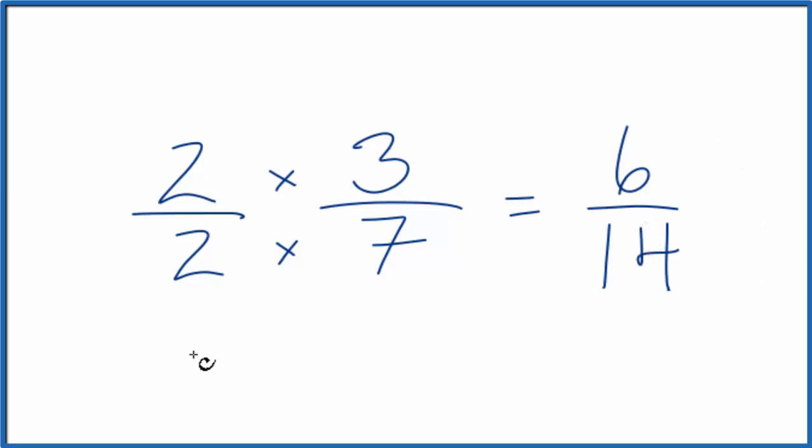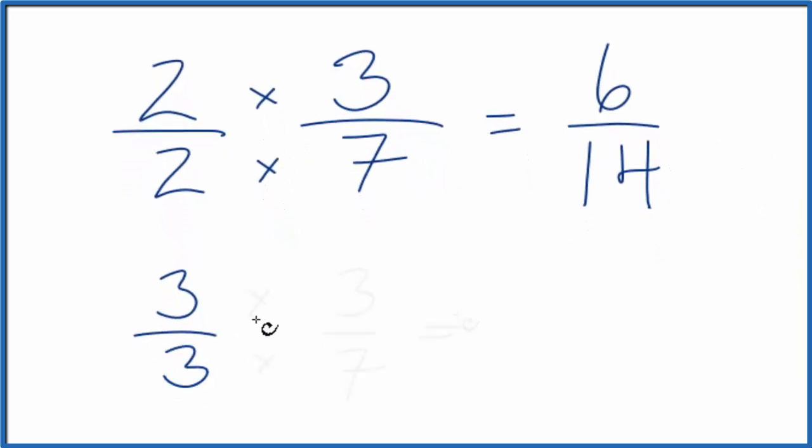Let's try another. How about 3 over 3? Again, 3 divided by 3 is 1, so we haven't changed the value. We have 3 times 3 on the top, and then 3 times 7 on the bottom, that's 9 twenty-firsts. And that's an equivalent fraction to 6 fourteenths or 3 sevenths.